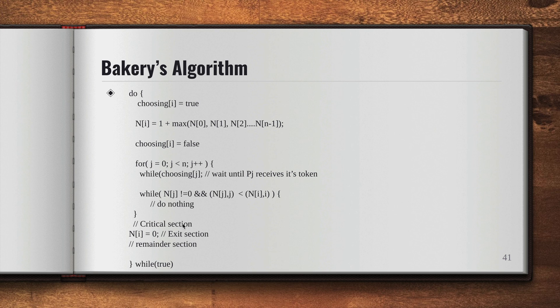And after it has finished its execution, it's going to set the N[i] to 0 and exit the critical section. Now the number scheme always generates the numbers in increasing order of enumeration, for example 1, 2, 3, 4, and 5.